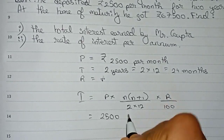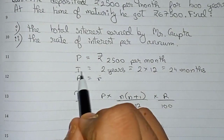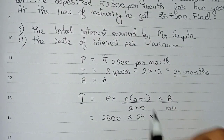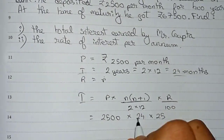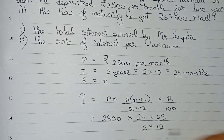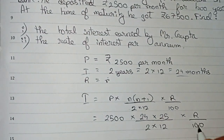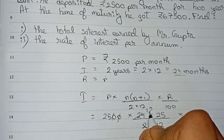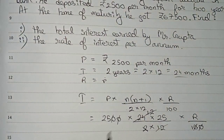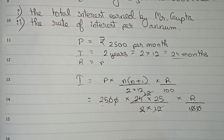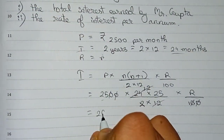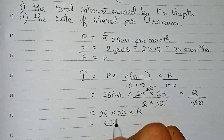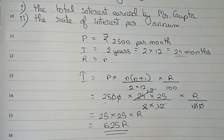When we put in the values: principal is 2500, multiplied by n — so n is our time, which is 24 — into n plus 1, so 24 plus 1 is 25, divided by 2 into 12, into r by 100. Cutting the 100s and the 12s, what remains is 25 into 25 into r, and 25 into 25 is 625r. So this will be our interest expression.